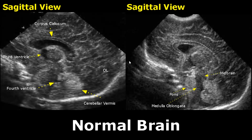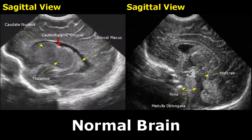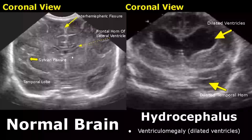This is the occipital lobe. This region is the caudate nucleus and this groove is the caudothalamic groove. Behind the caudate nucleus is the thalamus. This hyperechoic structure is the choroid plexus, which produces cerebrospinal fluid.